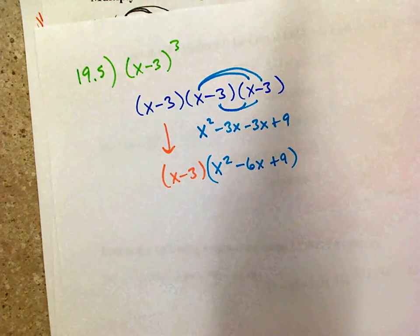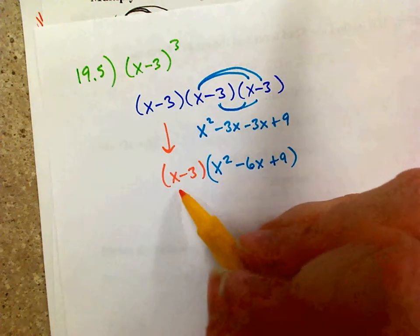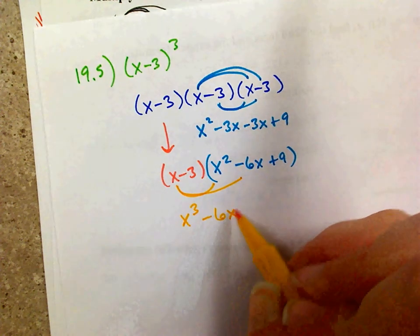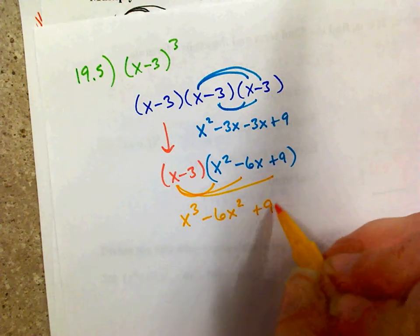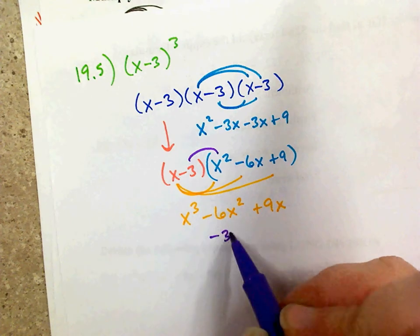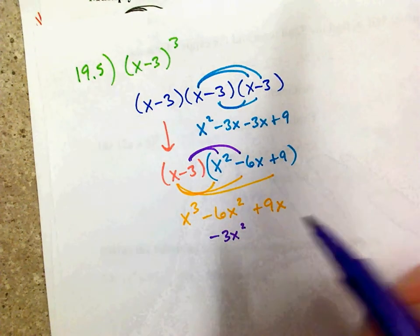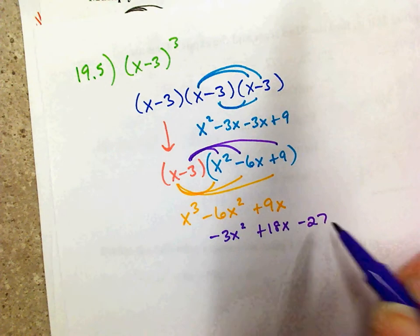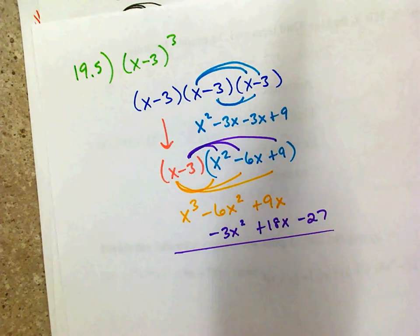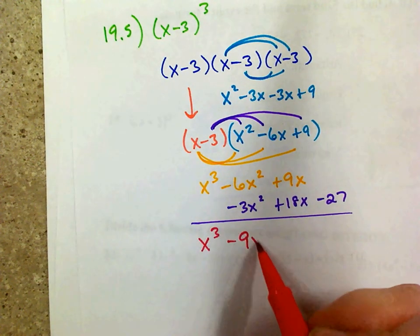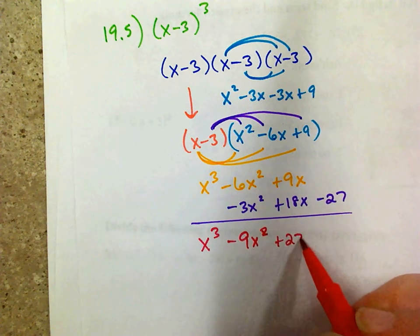Now I need to multiply that result by another x minus 3. Distributing x: x times x squared is x cubed, x times negative 6x is negative 6x squared, and x times 9 is 9x. Then distributing negative 3: negative 3 times x squared is negative 3x squared, negative 3 times negative 6x is positive 18x, and negative 3 times positive 9 is negative 27. Combine like terms to get x cubed minus 9x squared plus 27x minus 27.